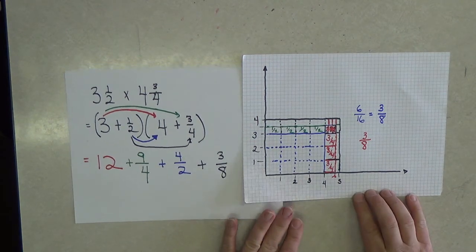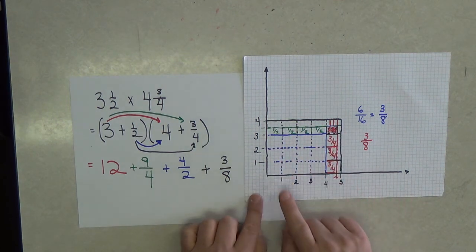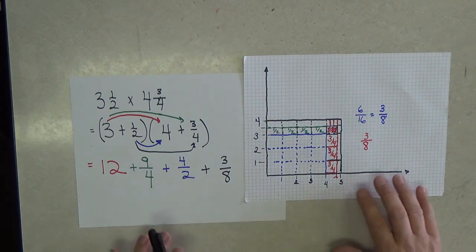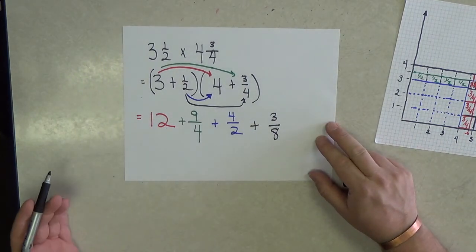And so we see that these 4 addends are illustrated nicely in my rectangular array. And now I just need to be able to do some addition. And the addition that we will do is the same one I did previously.